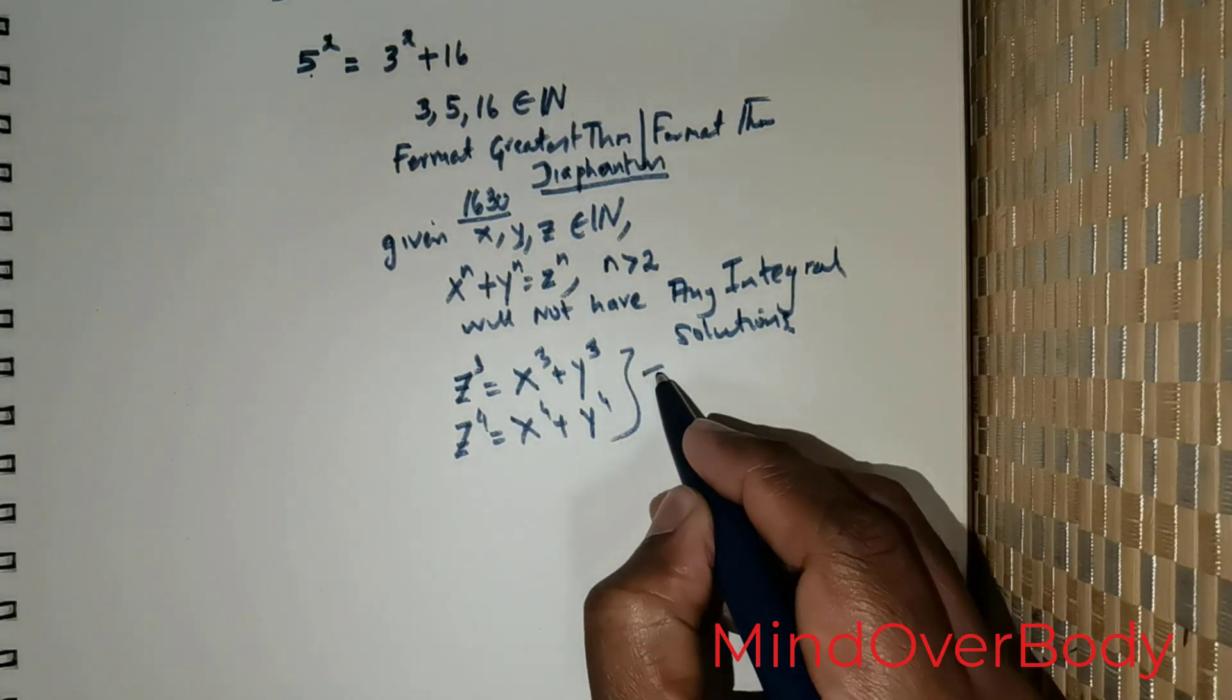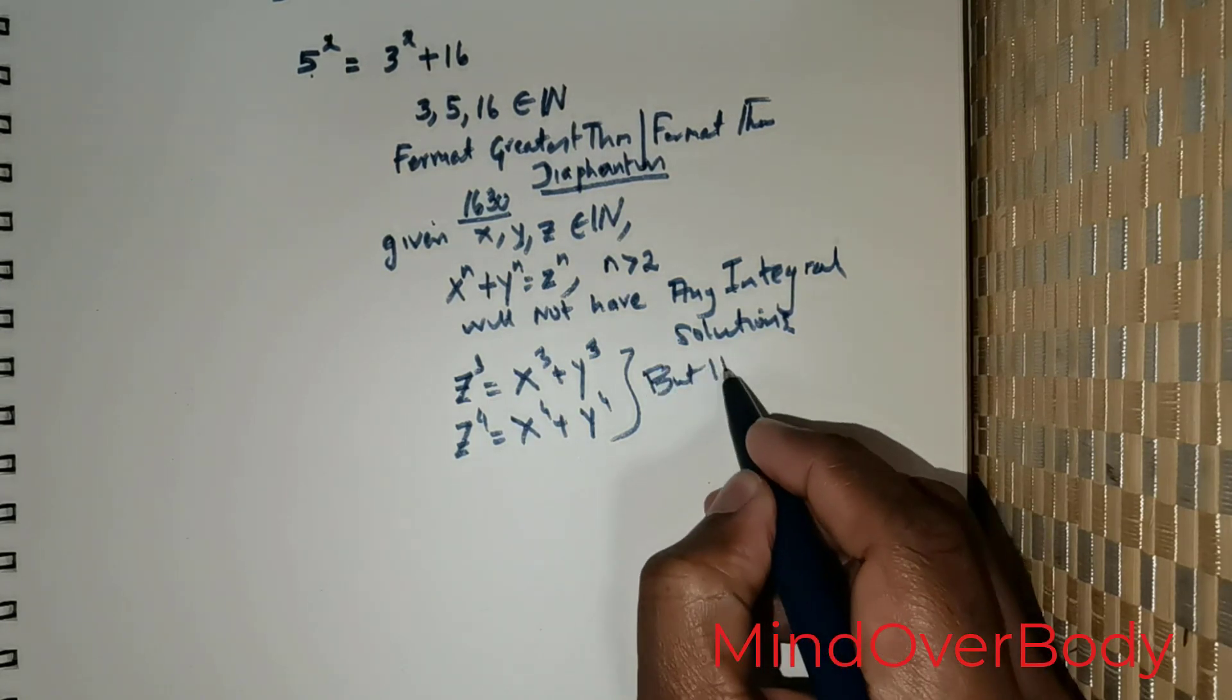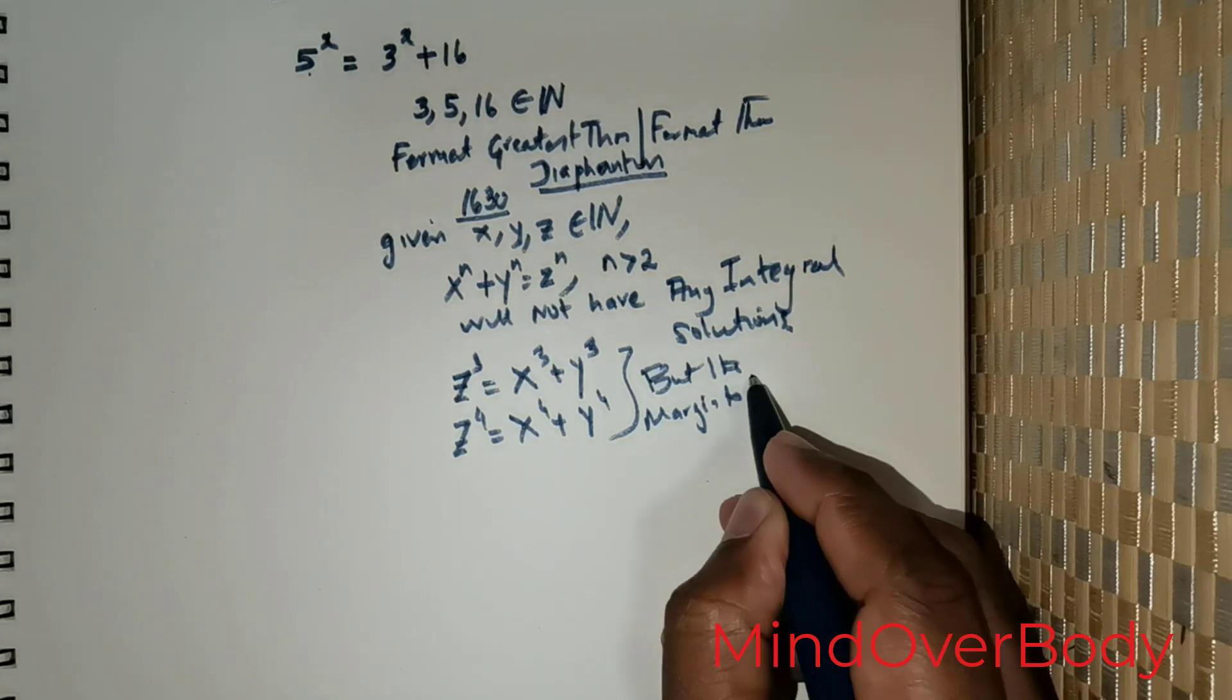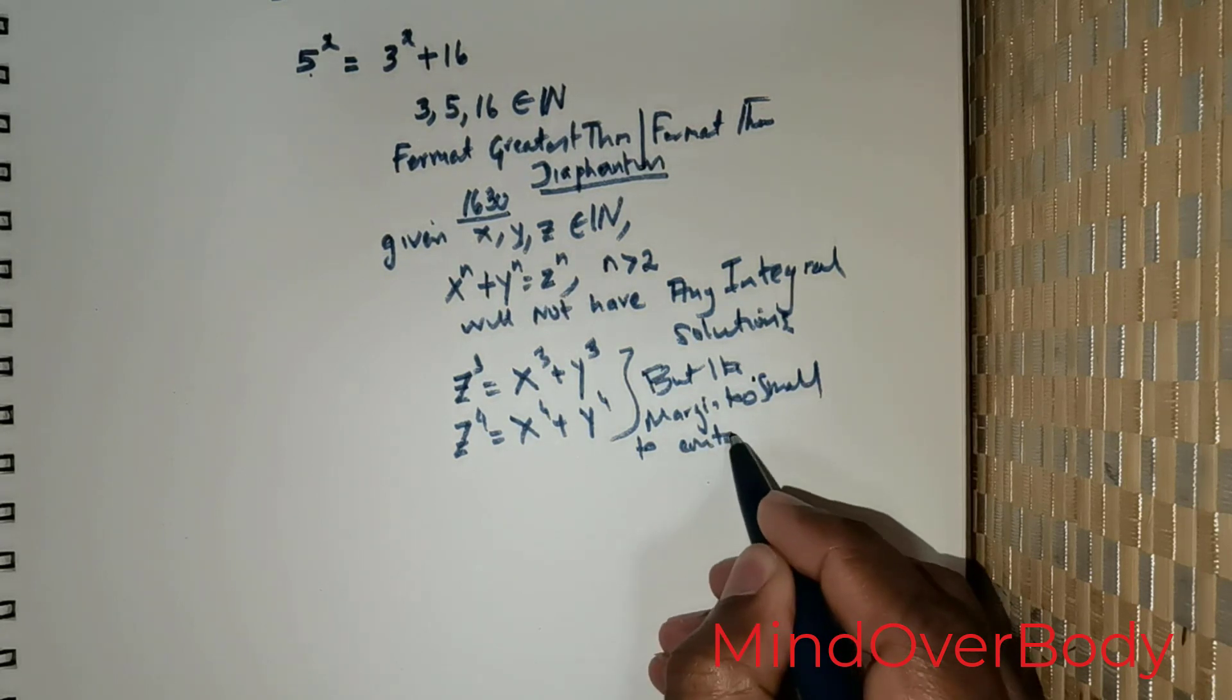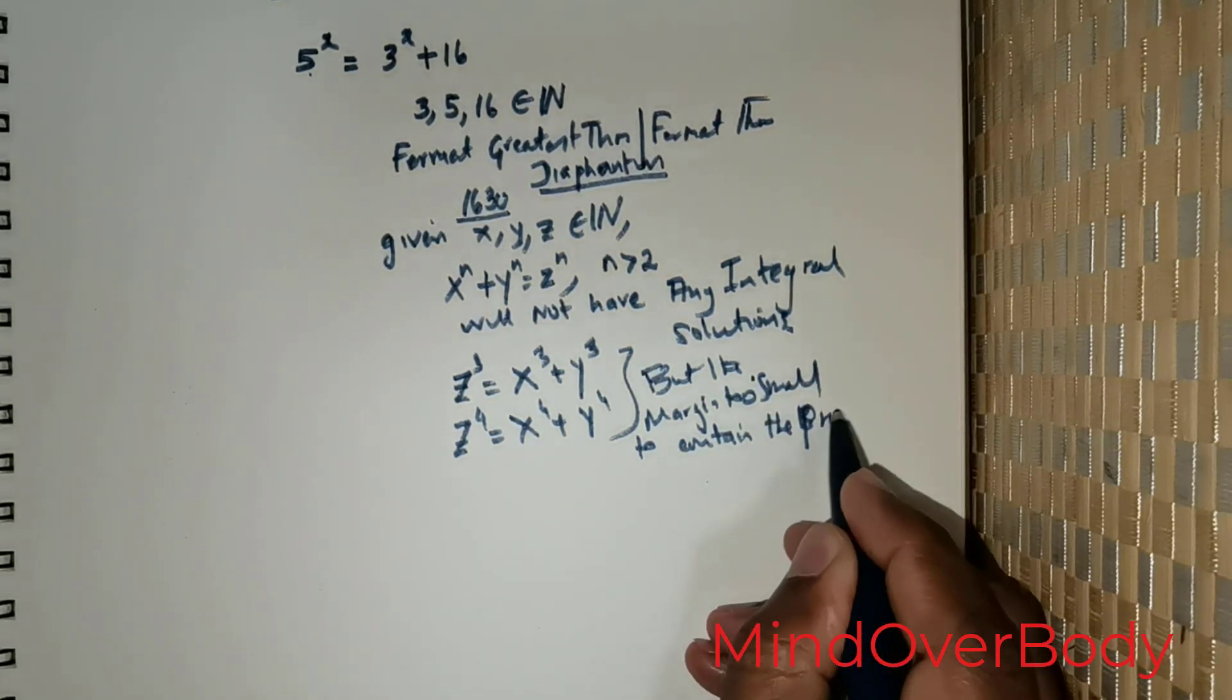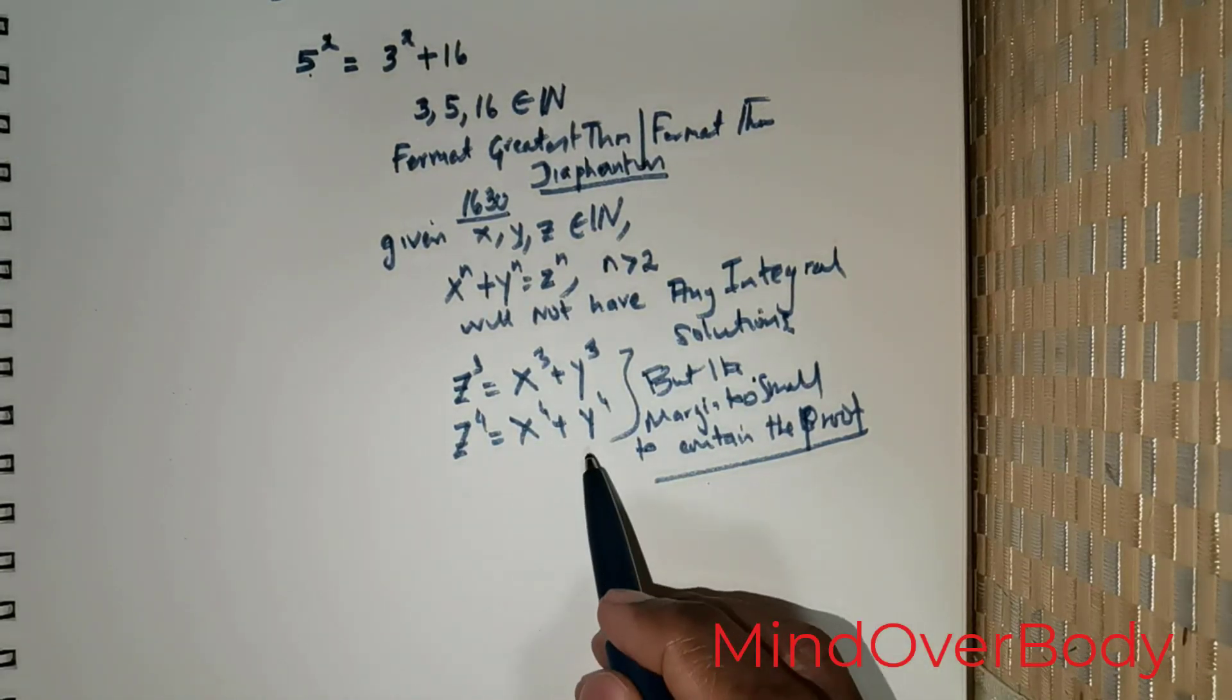And then Fermat has the proof, but the margin is too small to contain the proof. This is the exact words of Fermat; this is exactly what he said.